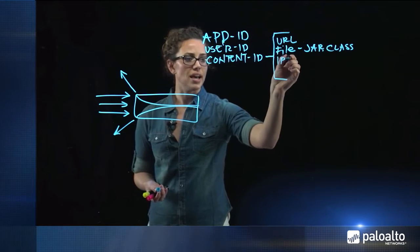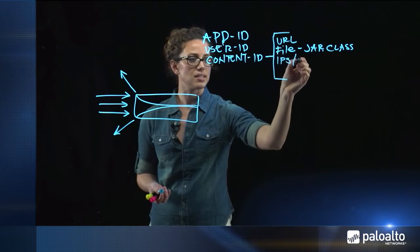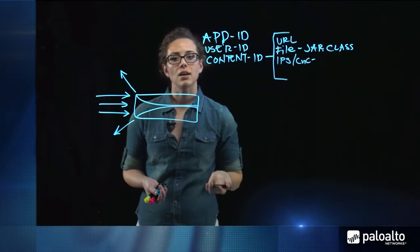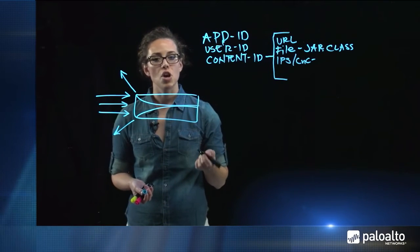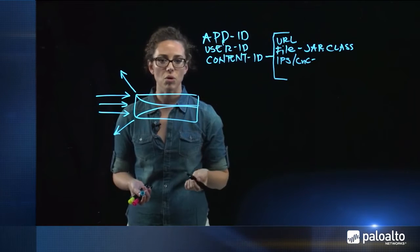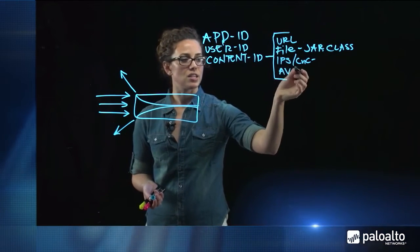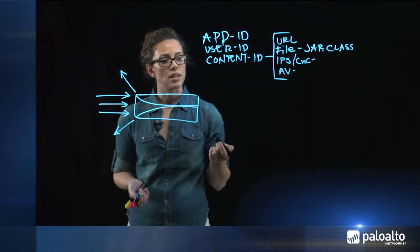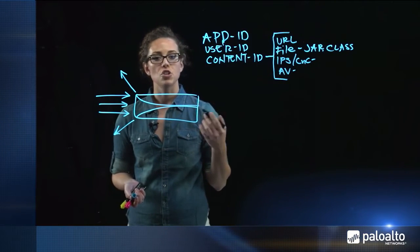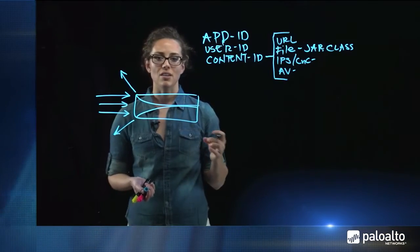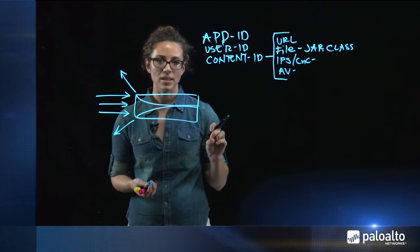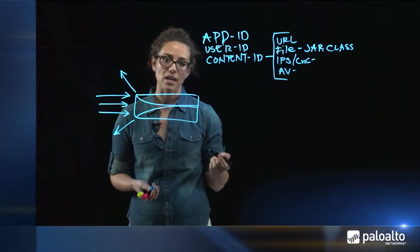We also have IPS and anti-command and control, which allows us to block known exploits and outbound command and control or callback channels. And then we also have a stream-based antivirus engine which allows us to block known malware. All of this is done in a stream-based fashion on a packet-by-packet basis, which has as little impact on throughput as possible, so you're really able to lock down the attack surface and reduce your risk.